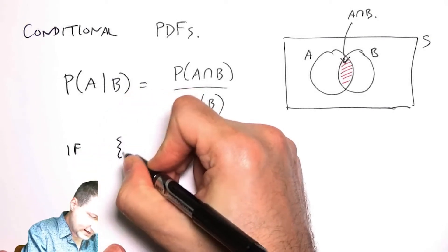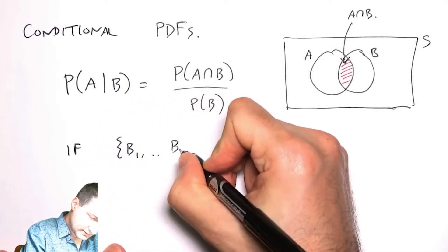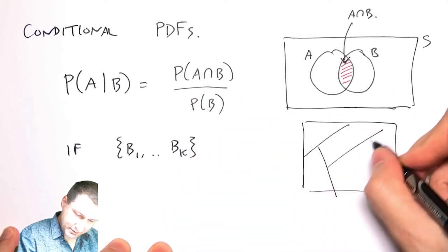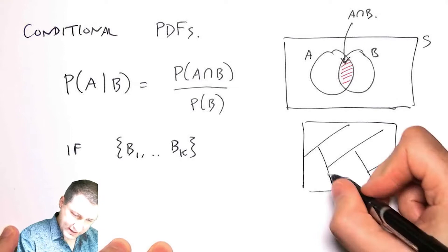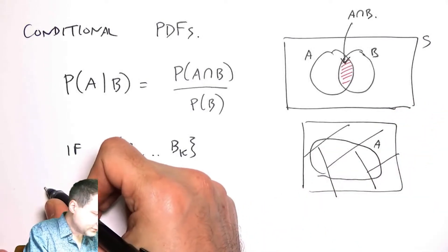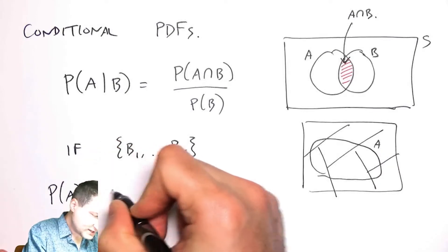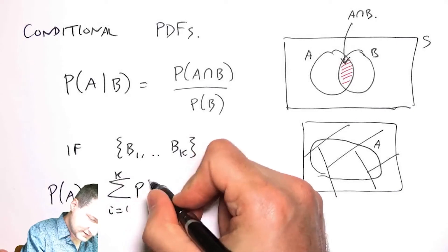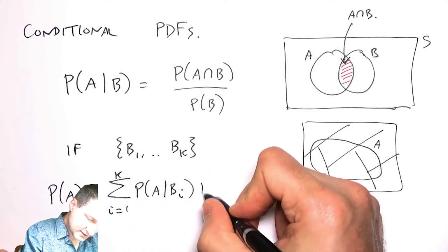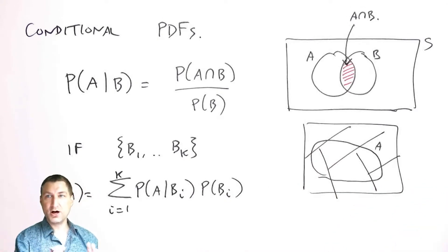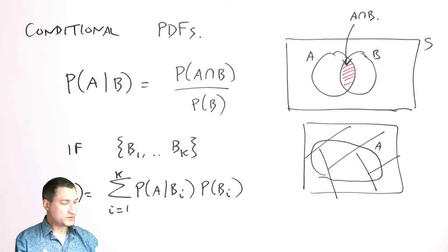An important consequence was that if I have a bunch of events B that partition up the sample space and I look at some event A, then the probability of A equals the sum of these conditional probabilities times each of the probabilities. This was called the law of total probability.